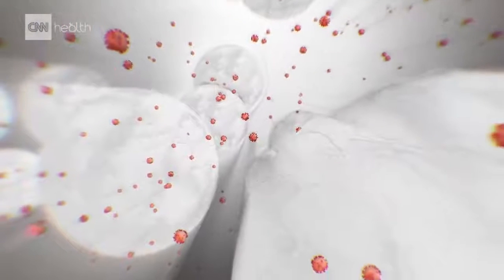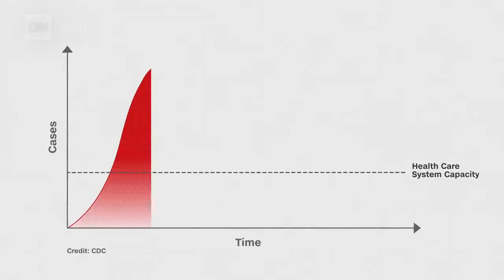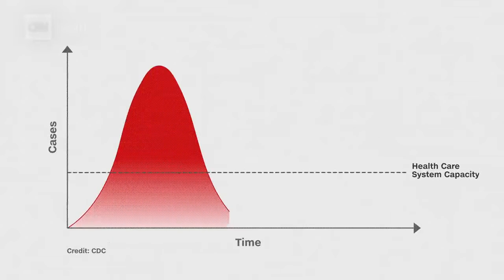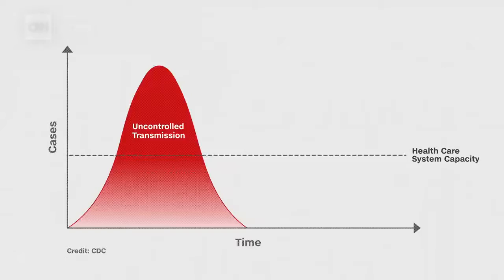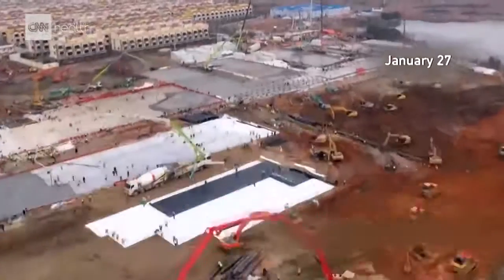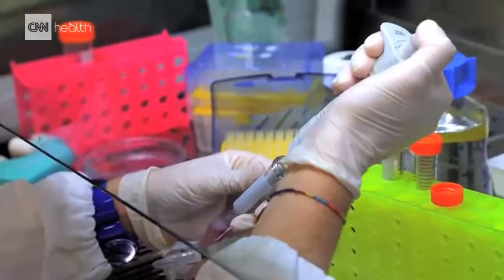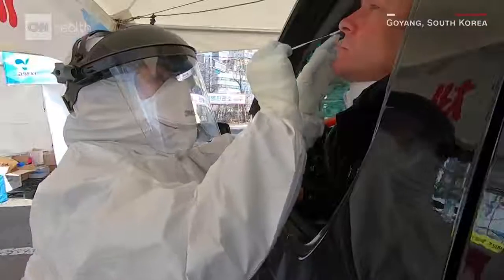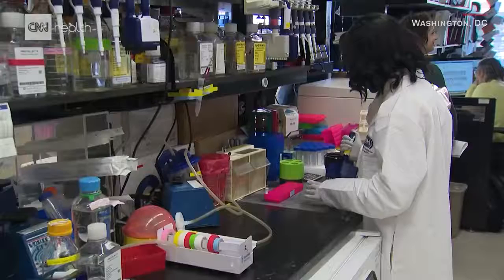When a virus spreads, the number of infected people can quickly rise. This sharp increase can overload the healthcare system with sick patients who need intensive care. One solution is to increase the healthcare system's capacity — whether that's by building hospitals, training additional doctors, or buying more equipment. But that takes time and resources, which countries don't always have during an epidemic.